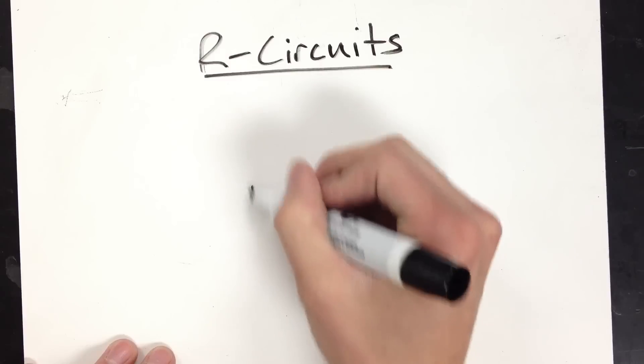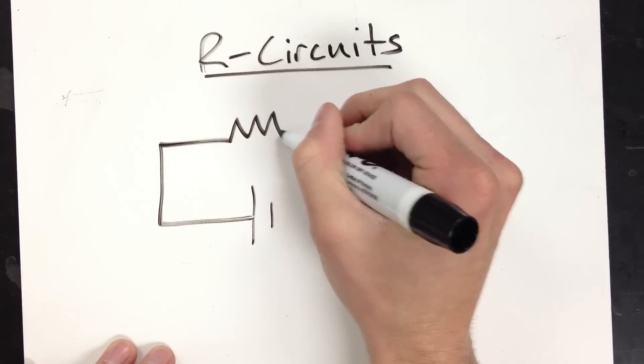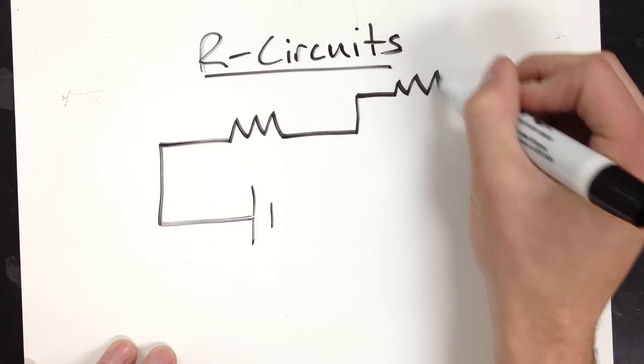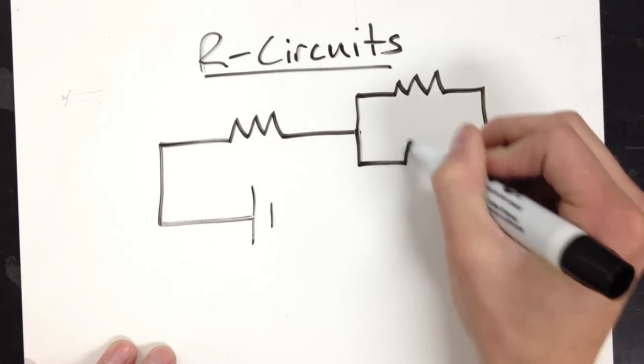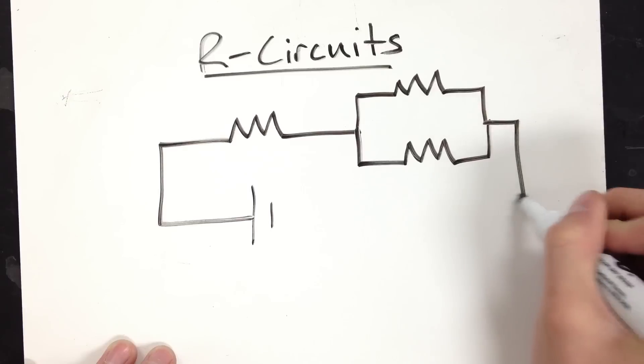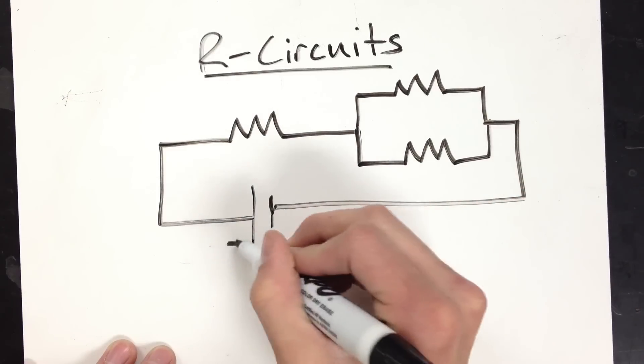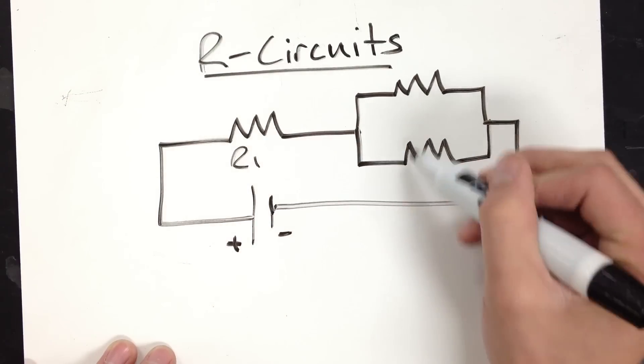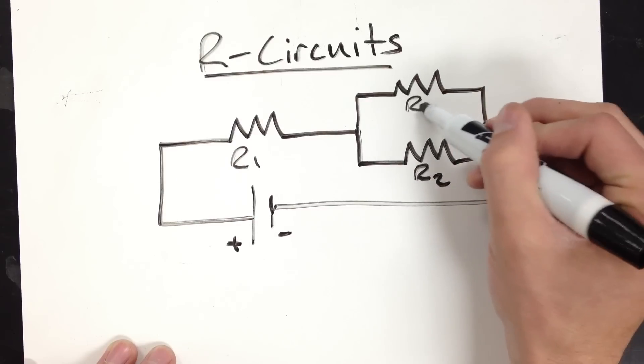So I will draw a demo one here, something like this. So I've got my battery, R1, R2, and R3.